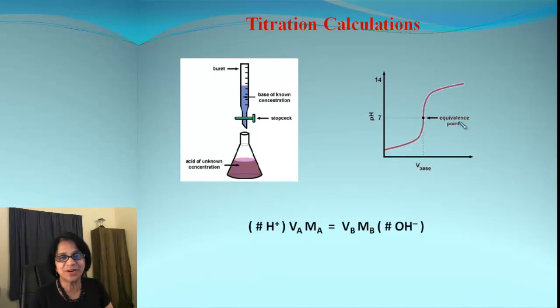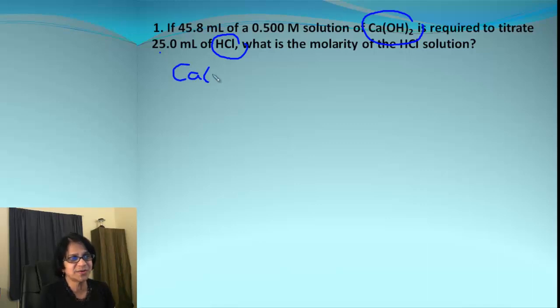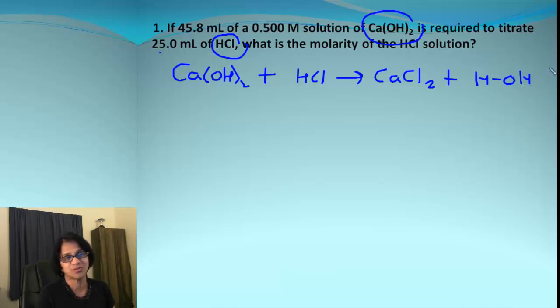Let's work on one titration problem. We're titrating calcium hydroxide with HCl. Let's get the reaction first: calcium hydroxide formula, and we end up getting a salt which is calcium chloride, and we get water. I like to write HOH, which is easy to balance—it's the same as H2O.